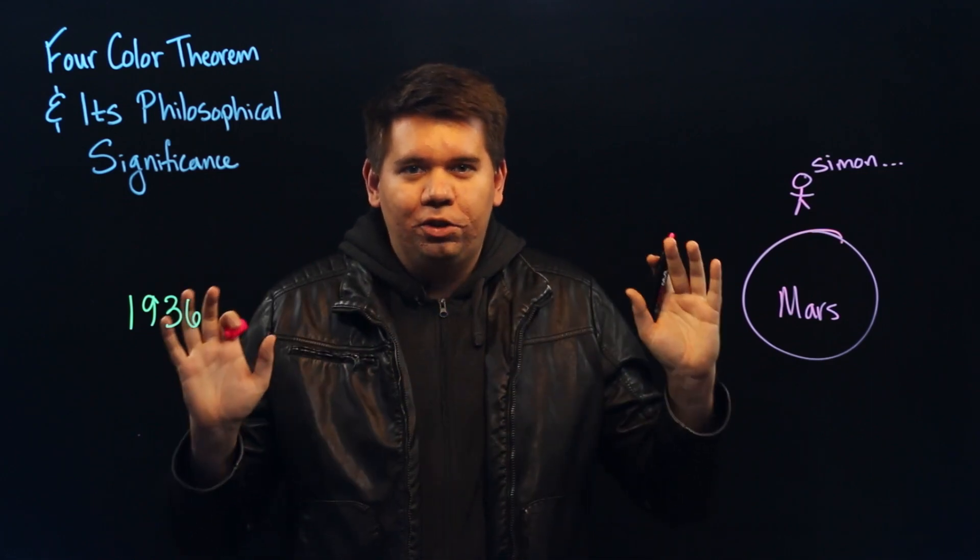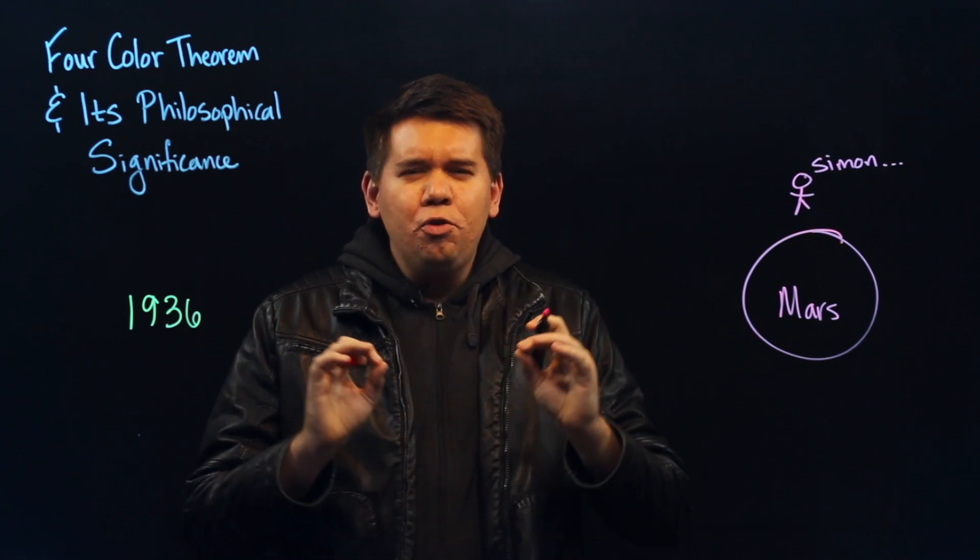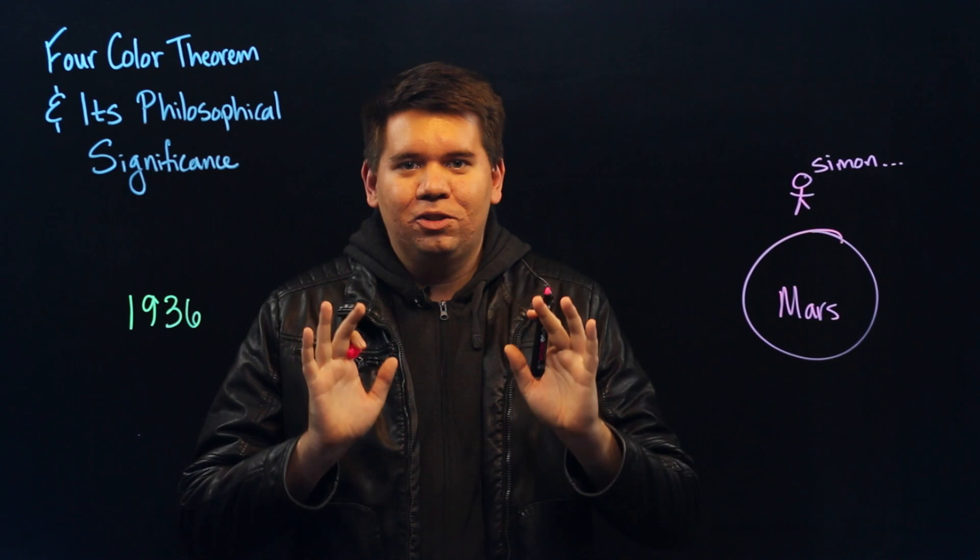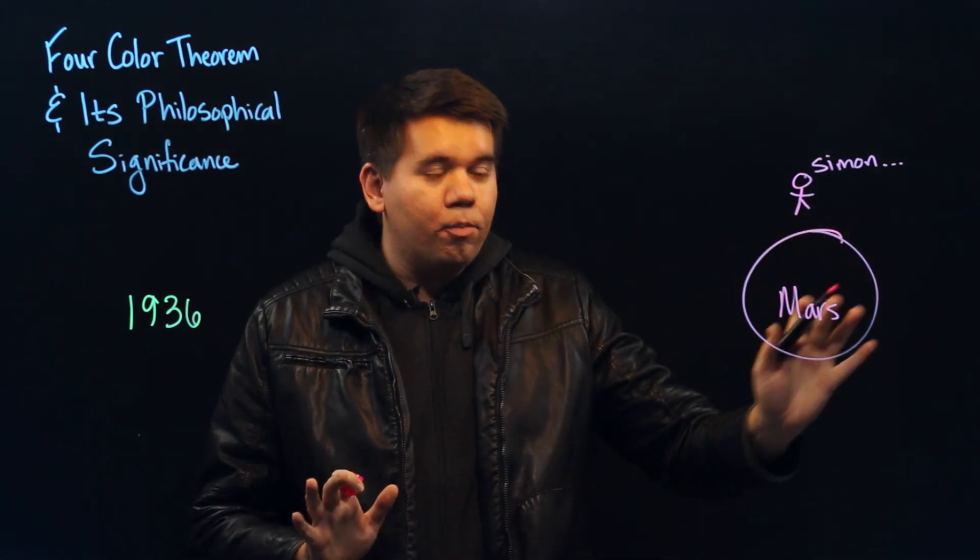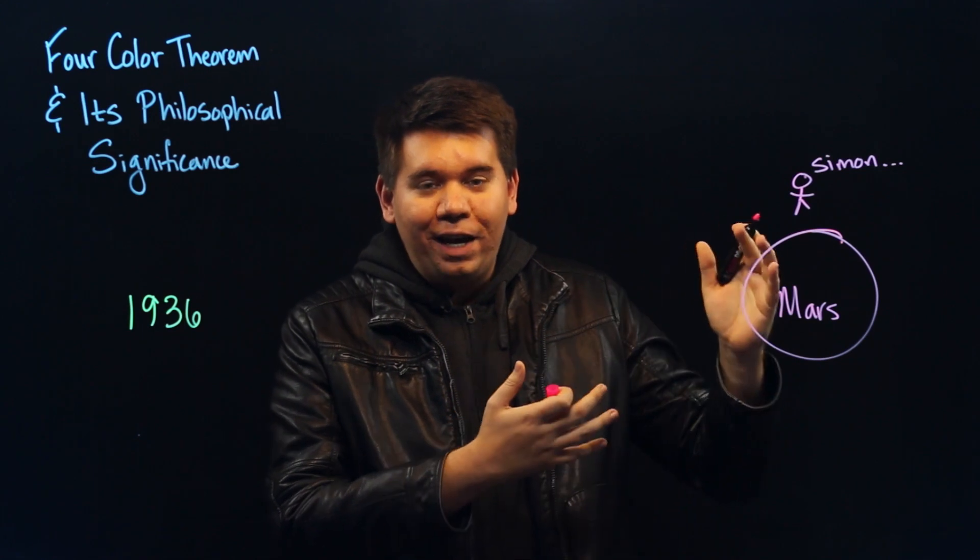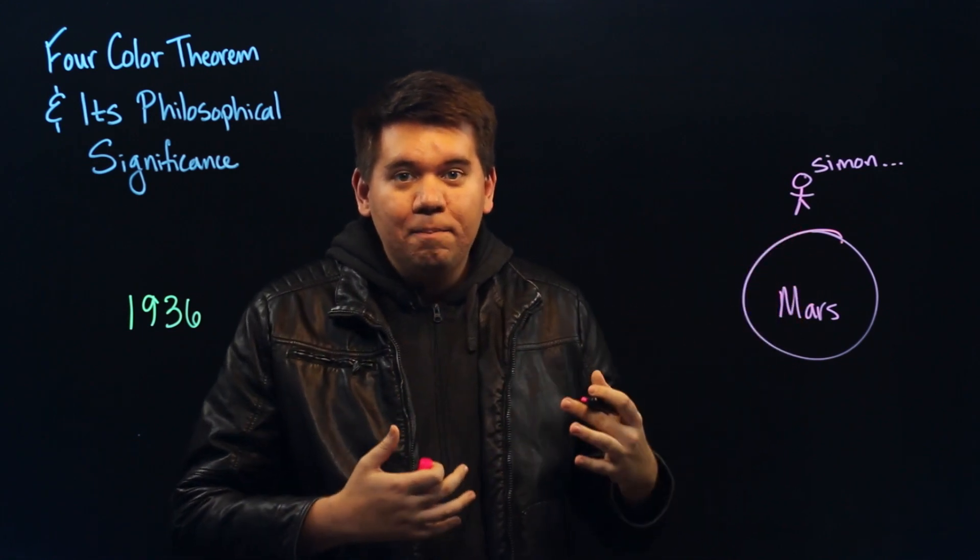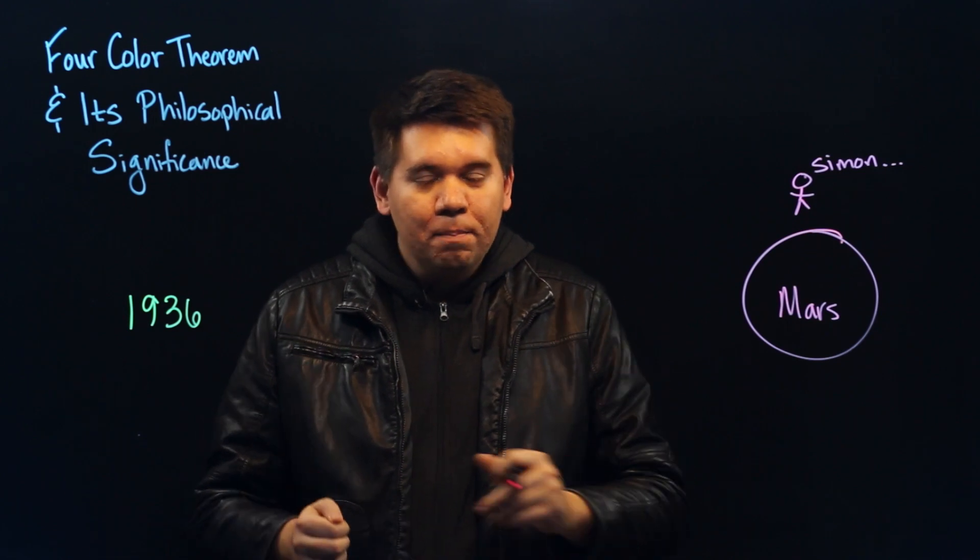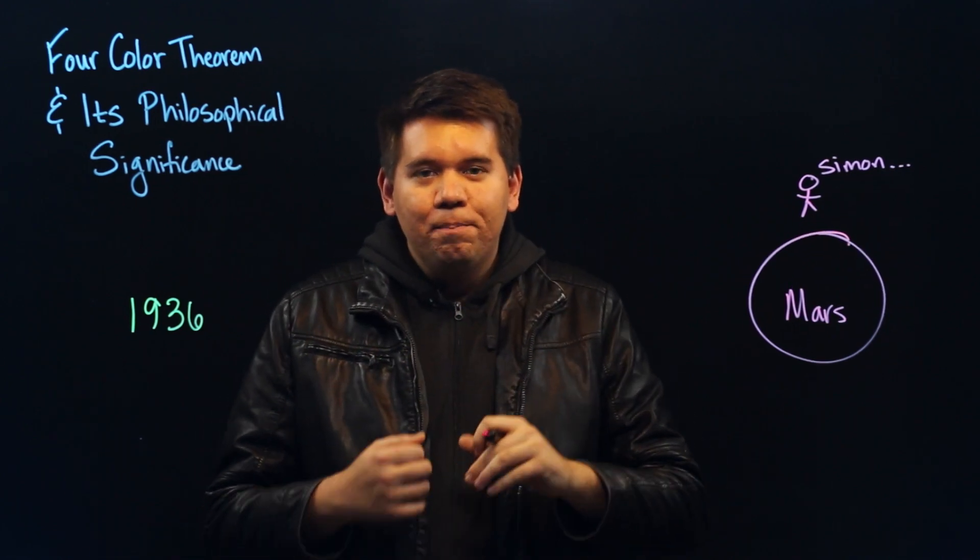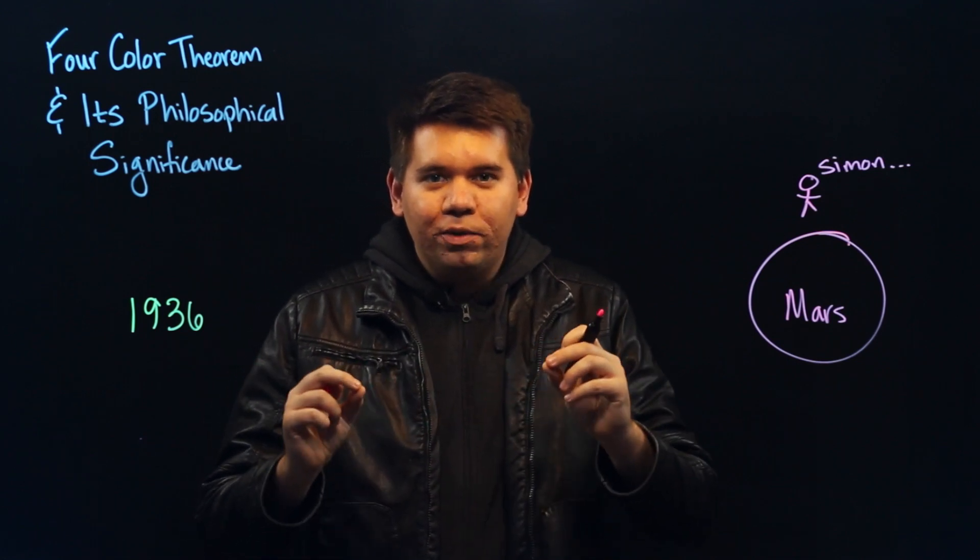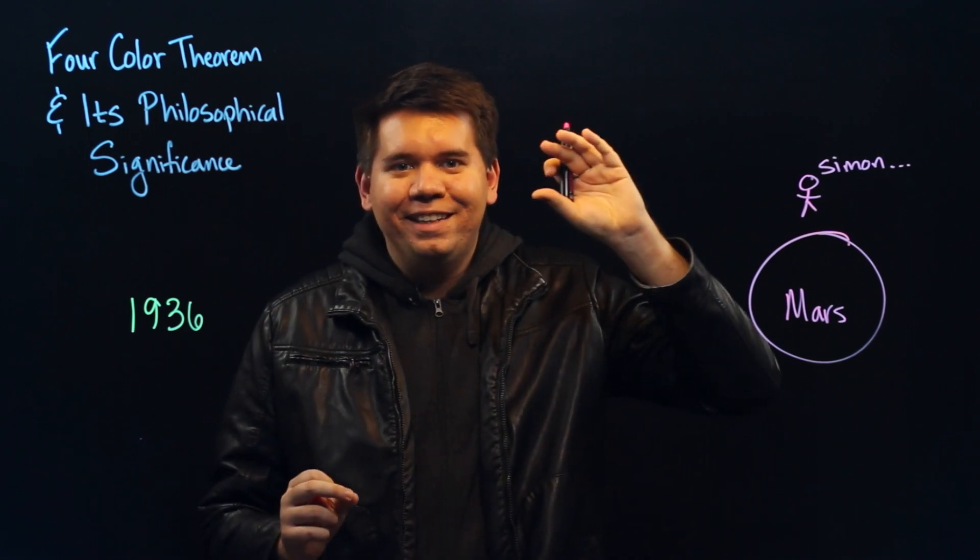And Simon would simply report, I have a solution to this problem, but it's too complicated for me to explain to you. So just trust me. And the Martian mathematicians, because Simon had proved himself to be a great mathematician, came to accept him. So if you would look in the Martian math textbooks, much of it would have regular proofs. But every so often, there would be some theorem, and the proof would simply say, Simon says.